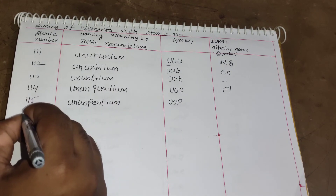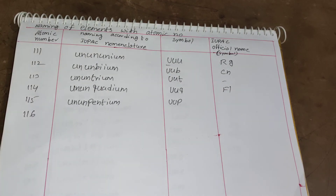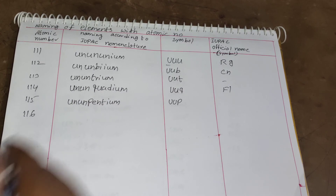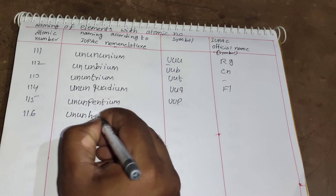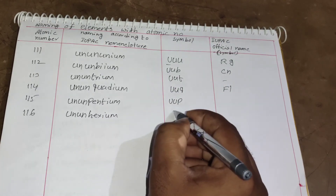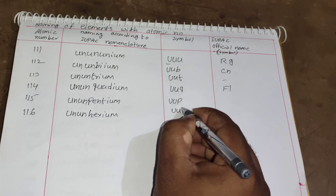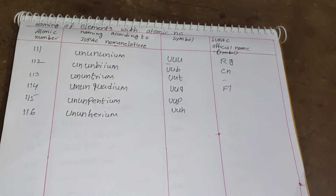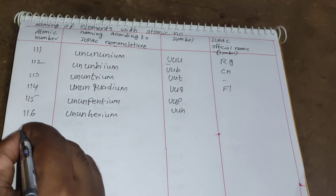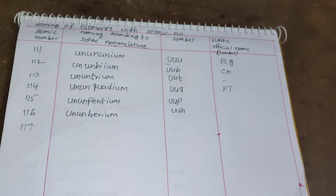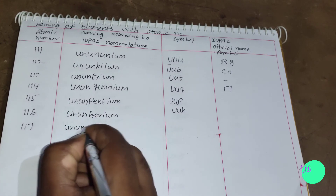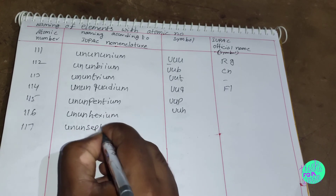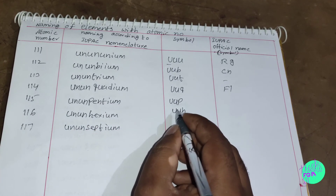For element 116: 1 = un, 1 = un, 6 = hex, plus '-ium' gives Ununhexium. The symbol is Uuh. For element 117: 1 = un, 1 = un, 7 = sept, plus '-ium' gives Ununseptium. The symbol is Uus.